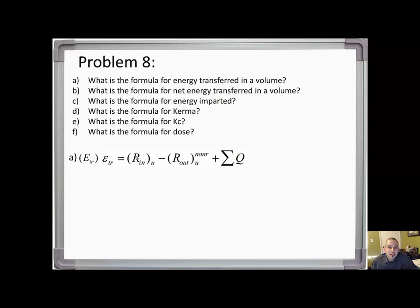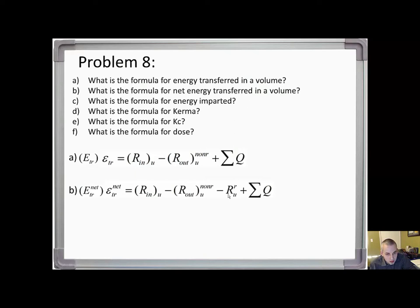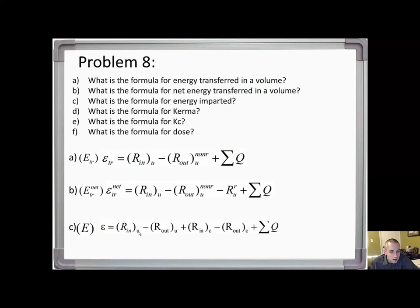I'll ask about the quantities in the next question. What is the formula for net energy transfer in a volume? The only difference of course is the addition of the quantity which is the radiant energy emitted as radiative losses by charged particles which originated in a volume, regardless of where the radiative loss events occur. What's the formula for energy imparted? This formula applies to uncharged particles, denoted by u, and charged particles, denoted by c.